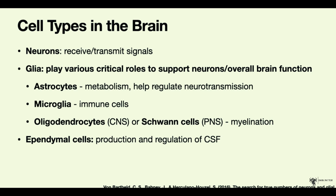The second class of glia is the microglia. Microglia are thought to be the immune cells of the brain. They become activated in response to certain stimuli and can then clear up any dead cells or unused material that is no longer needed by neurons.